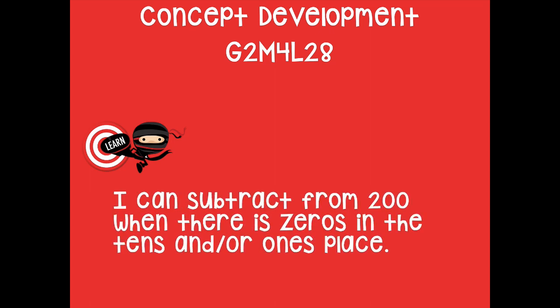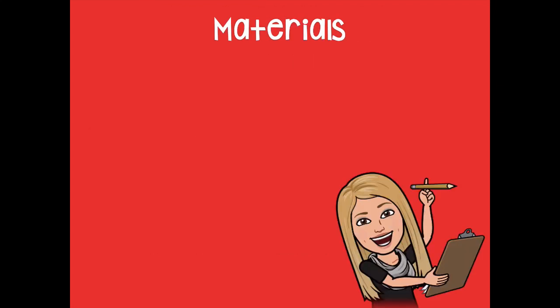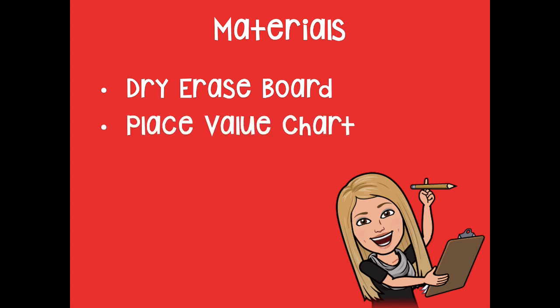goal for today says I can subtract from 200 when there are zeros in the tens and/or ones place. The materials that you'll need for this lesson are your dry erase board and your place value chart, so make sure you have those materials before we get started.